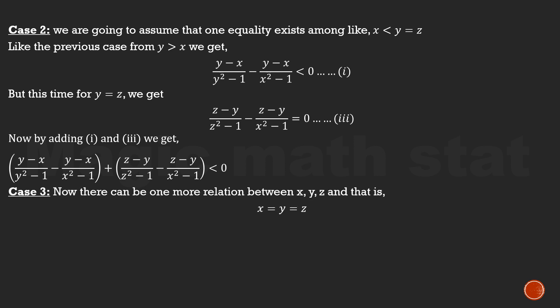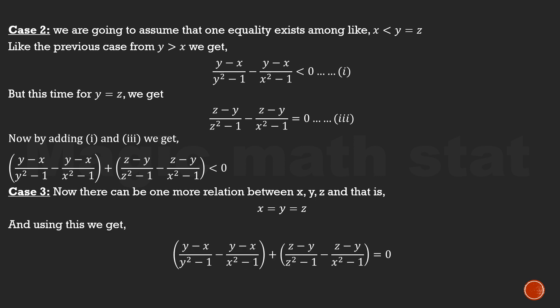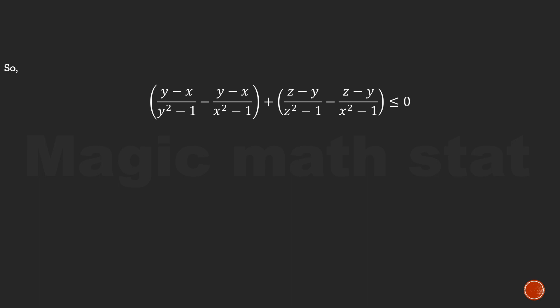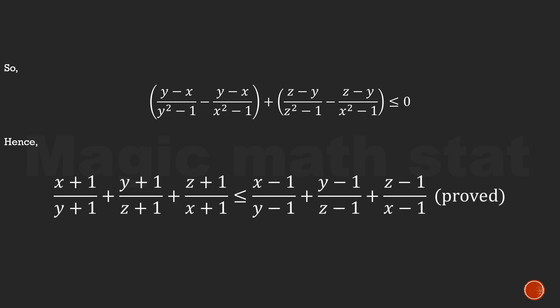Case 3: x = y = z — all three are equal. Evaluating the expression gives 0, because all the numerators (y-x) and (z-y) are 0. Combining all three cases, we get (y-x)/(y²-1) minus (y-x)/(x²-1) plus (z-y)/(z²-1) minus (z-y)/(x²-1) ≤ 0, which is exactly the simplified form of the main inequality.